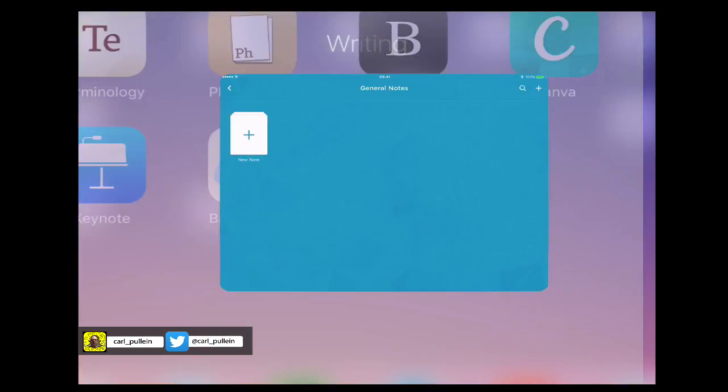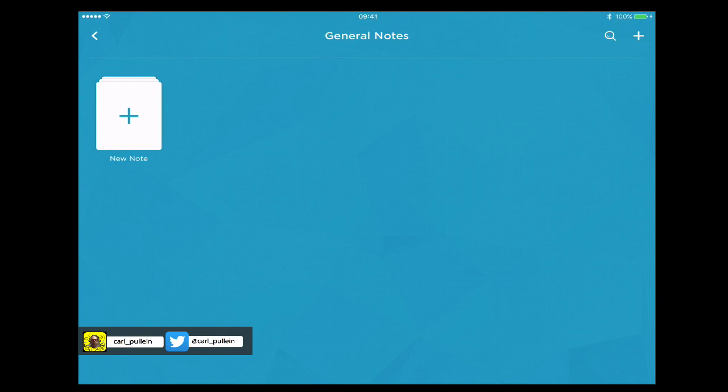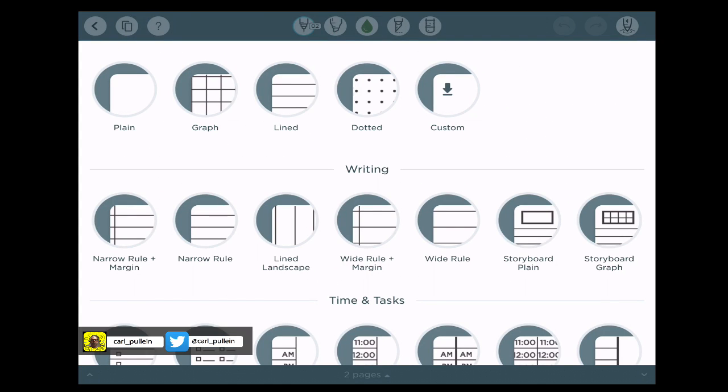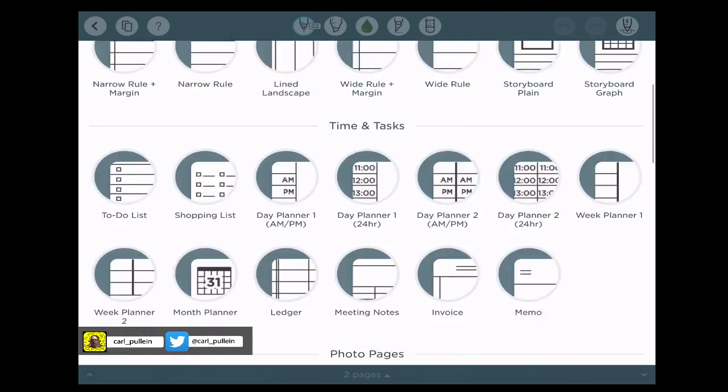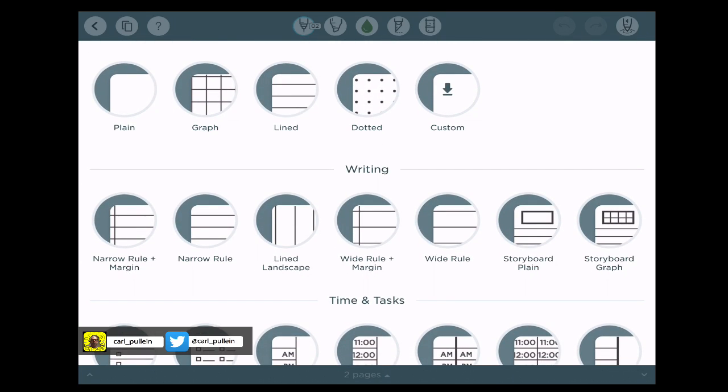So if I just open up Penultimate, here we go. Penultimate is the application which is owned by Evernote and it is specifically for taking notes in a written form. When you come to starting a new page you can actually choose whatever you want. There is an awful lot of different styles of paper that you can choose.